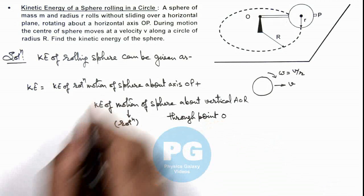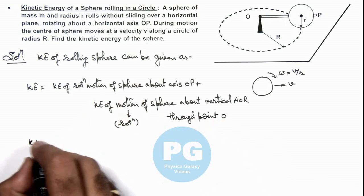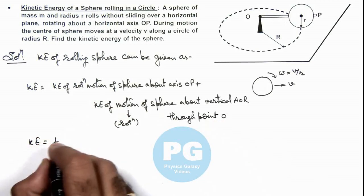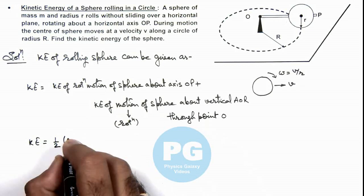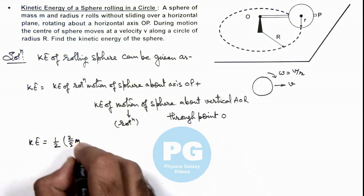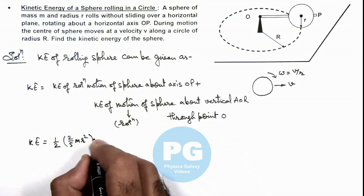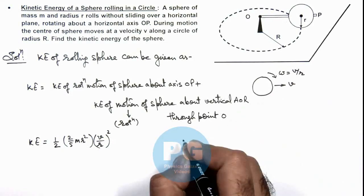So in first case, we can write that kinetic energy as half, and this moment of inertia is 2 by 5 m r square multiplied by the angular speed v by r whole square, which we are writing over here.